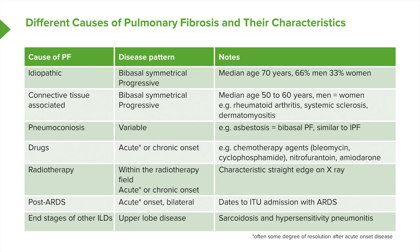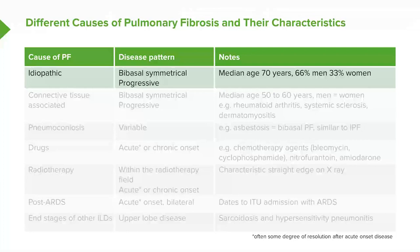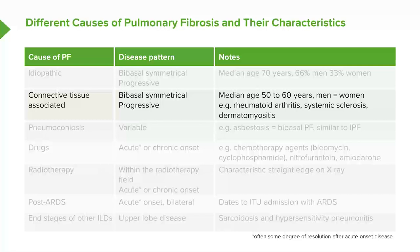This table describes the differences between the different causes of pulmonary fibrosis. At the top, you have idiopathic disease, which is bibasal, symmetrical, and progressive. It tends to affect men, and the median age of onset is 70 years.